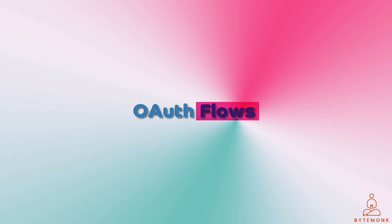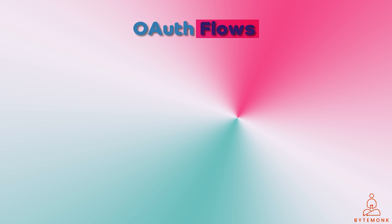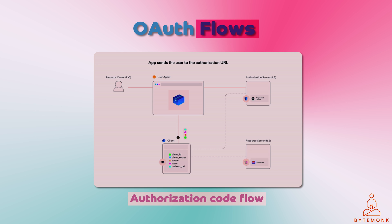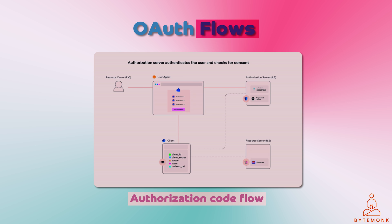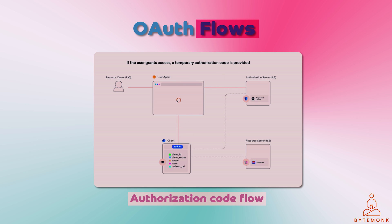So let's talk about flows. There are four types of OAuth 2.0 flows. Authorization code flow is the most common — it is used when the application needs to access protected resources on behalf of the user. The user first authenticates with the identity provider (IDP), which redirects the user back to the application with an authorization code. The application then sends that code to the authorization server, which validates it and returns an access token and a refresh token.